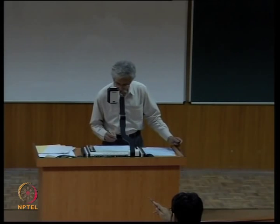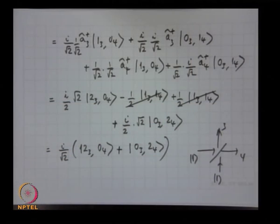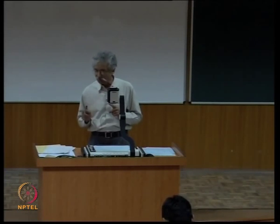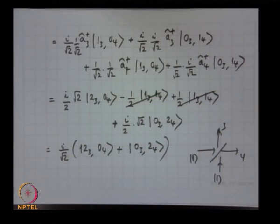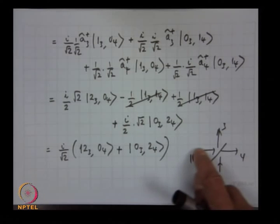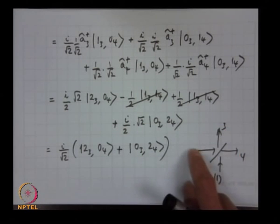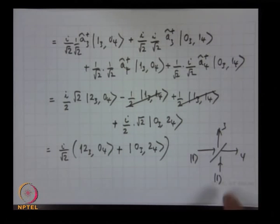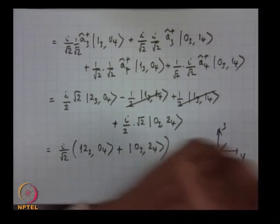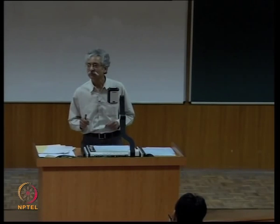To get one photon at each output, there are two indistinguishable paths: both photons transmit, or both reflect. Since the photons are identical, you cannot distinguish which photon came from which port. The probability amplitudes for these two processes must be added before squaring, and they cancel due to the π/2 phase of the reflection coefficient. So the total probability of getting one in 3 and one in 4 is zero. This is a two-photon interference effect, entirely non-classical.